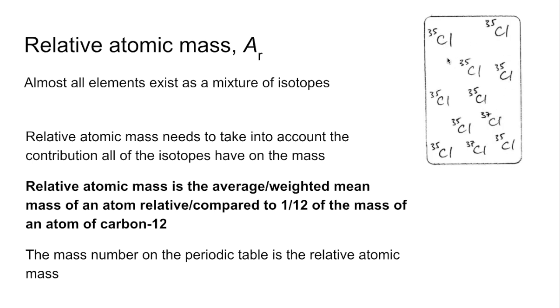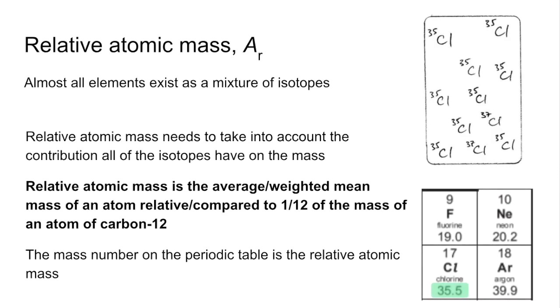But a sample of chlorine, which has a mixture of the isotopes in, well that needs to take into account the proportions of each isotope. So what do we see on the periodic table? We see 35.5.